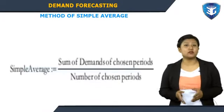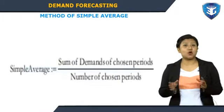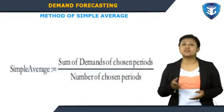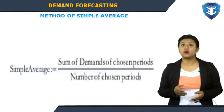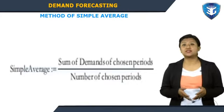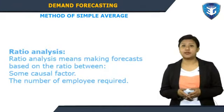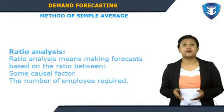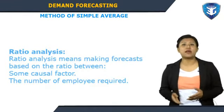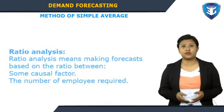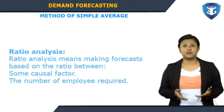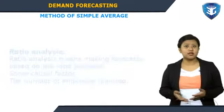The method of simple average is faulted because all past periods are given equal importance, whereas it is justifiable to accord higher importance to recent past periods. Ratio analysis means making forecasts based on the ratio between some causal factor, such as the number of employees required.